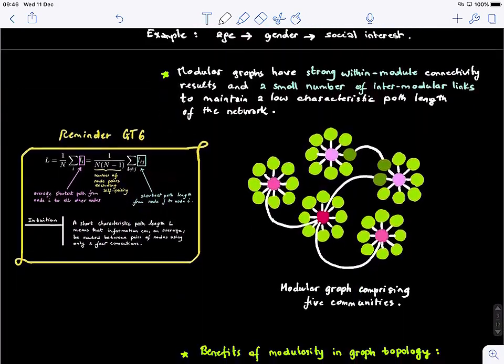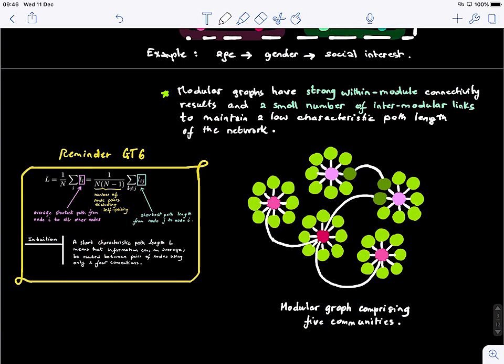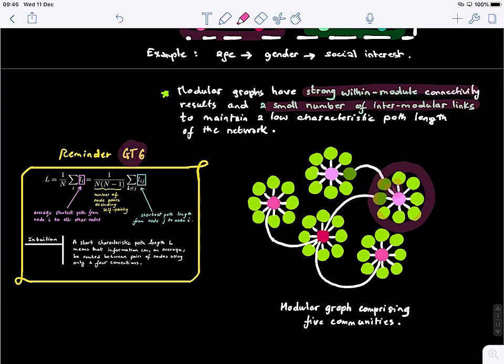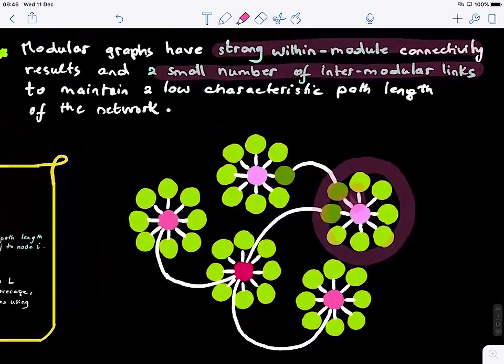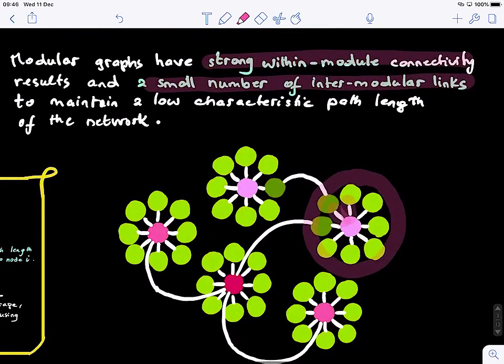Modular graphs have strong within-module connectivity. The connectivity within a single module is very strong. And it's a small number of inter-module links to maintain a low characteristic path length of the network. So what does that mean? We have seen this before in graph theory lecture six. Basically, within a module all nodes are strongly connected.